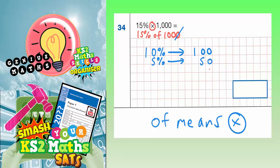And obviously you need to then just put the two together. And that 10% and 5% will give you 15%. So we need to put these two together as well. 100 plus 50 is 150. So our final answer is 150.